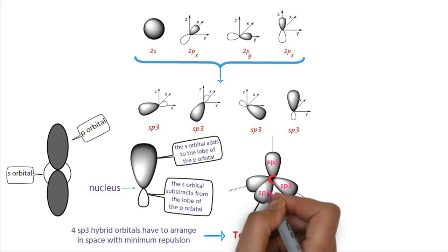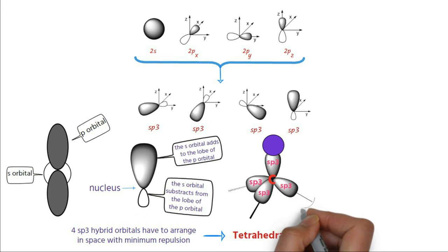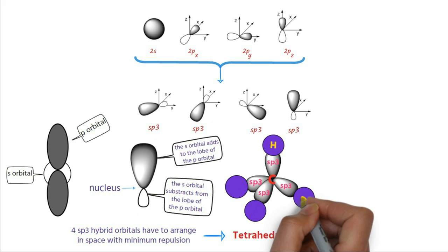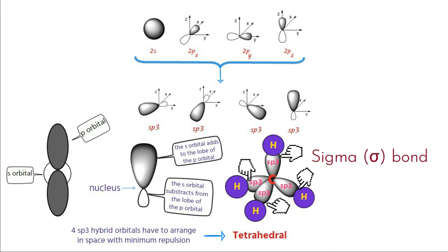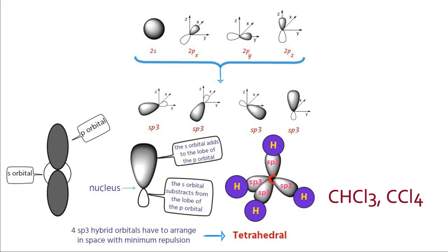In case of methane, each of the 4 sp3 hybrid orbitals overlap with the s orbital of hydrogen to form four identical CH sigma bonds. We call these sigma bonds because they are formed by head-on overlap of orbitals. All single bonds found in organic compounds are sigma bonds. Other examples similar to methane include CHCl3, CCl4, etc.